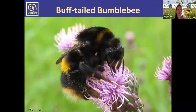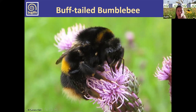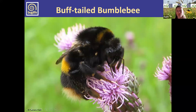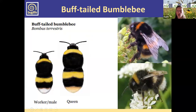This is our buff-tailed bumblebee queen, Bombus terrestris — big, very common, and the first to emerge in spring. She has two orangey-yellow bands — one on her thorax and one on her abdomen — though the abdomen band isn't right at the top, so there's a bit of black above it. The band on the thorax can be quite reduced and variable. The tip of her tail is an off-white — never a really clean snowy white — hence the name buff-tailed.